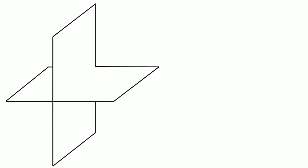This is how we project any point in the first quadrant. Now consider a special case where the point is lying in the vertical plane itself, at a distance of 45 mm above the horizontal plane. When you project this point onto the vertical plane, you get point a-dash exactly at the same location where point A is lying. When you draw the top view from the top, the projection of point A on the horizontal plane will be exactly on the XY line itself, because the point is in the vertical plane.